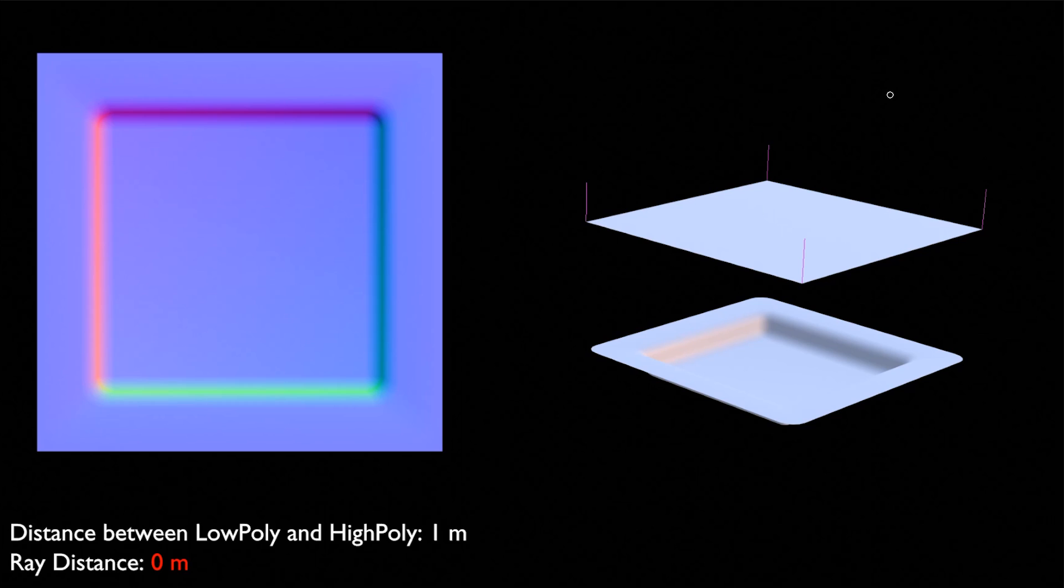In this first test our ray distance is set to 0 meters. The normal baking process is pretty straightforward. Rays are cast inward from the low poly model. Inwards means the opposite of the split normal direction which are shown as pink lines here on the model. So if I were to trace the inward rays it would look like this. Once the rays intersect with the high poly model, the resulting normal information is baked to a texture, our normal map here on the left.